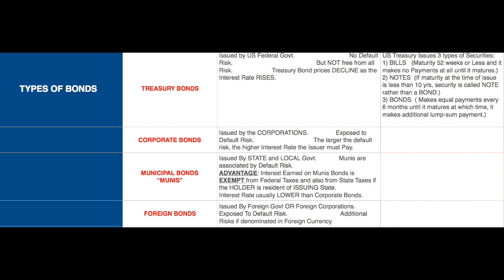Municipal bonds, also called munis, are issued by state and local governments. Like corporate bonds, munis have default risk. However, munis offer one major advantage: the interest earned on most municipal bonds is exempt from federal taxes, and also from state taxes if the holder is a resident of the issuing state. Consequently, municipal bonds carry interest rates that are considerably lower than those of corporate bonds with the same default risk.